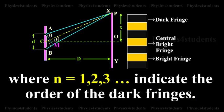Where n is equal to 1, 2, 3 and so on indicate the order of the dark fringes.